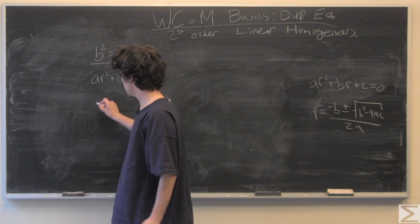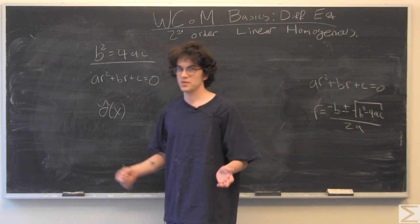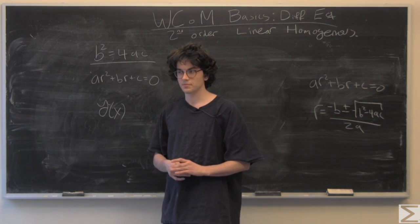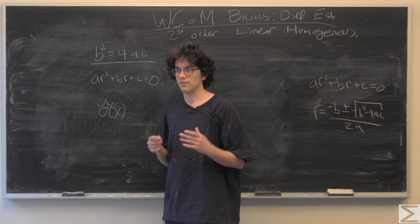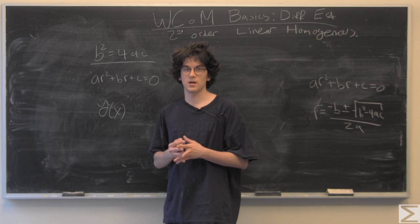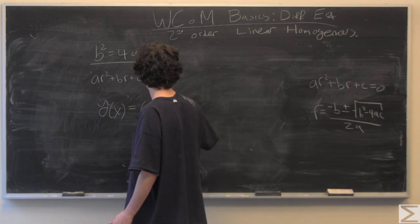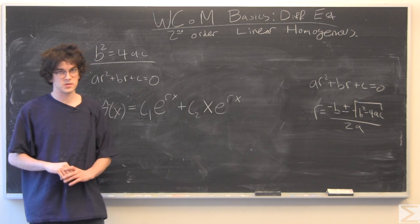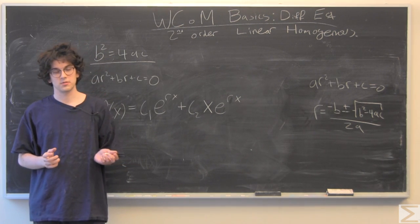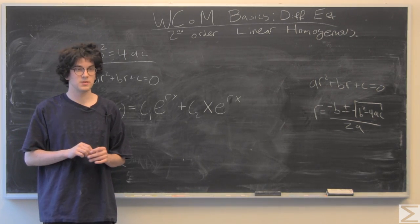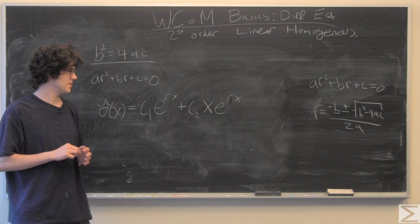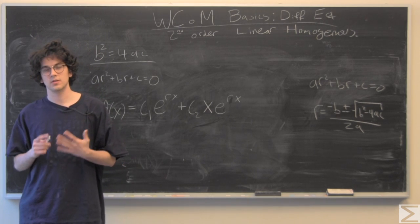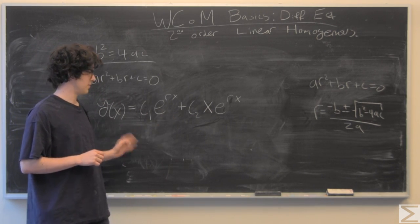However, if you just put that into our grand formula where we throw all of the two linear combinations, it won't work because if you have two of the same equation, they're obviously not linearly independent. So what we do, and there is a reason for this, which is outlined in our differential equations book that we have offered on our website that I've talked about at least once a video. We multiply this second term by x so that we now have two linearly independent parts of our equation.